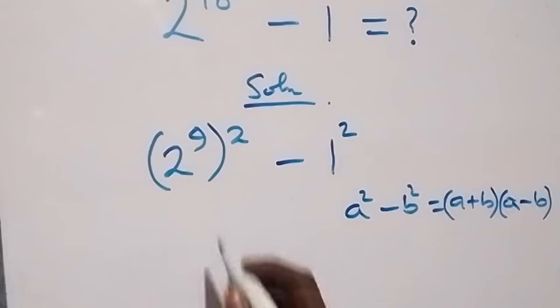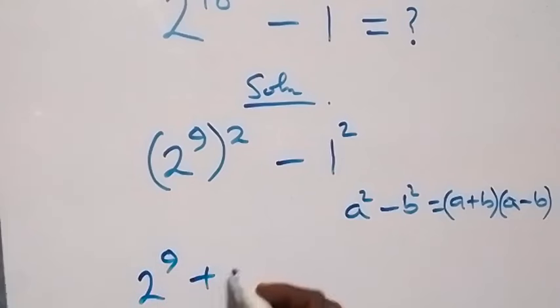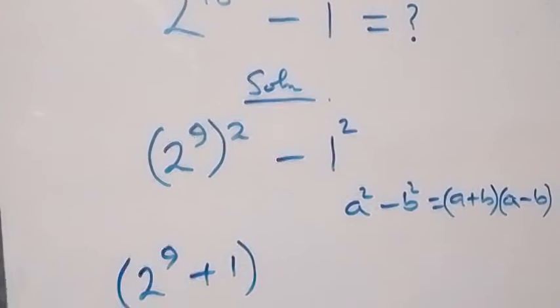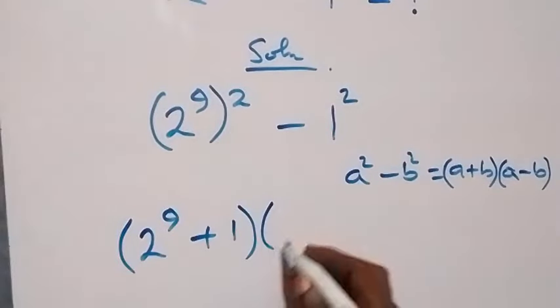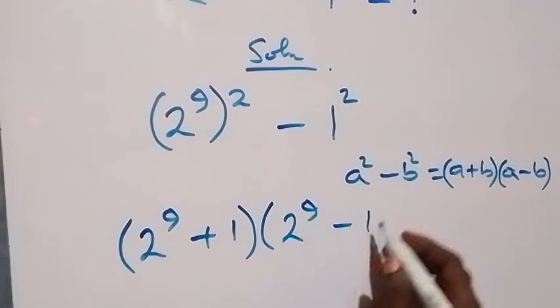That is from here, 2 raised to power 9 is serving as a and 1 is serving as b. So, we have 2 raised to power 9 plus 1. Then, into bracket, we have 2 raised to power 9 minus 1.